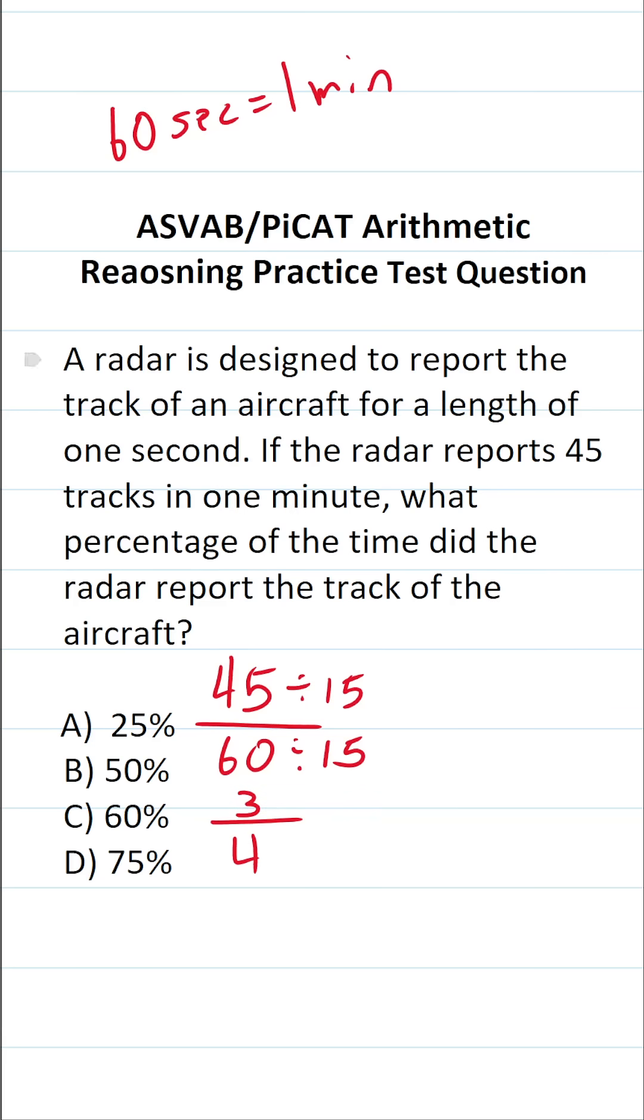You should know that 3 fourths is the same thing as 75%. Now I'm going to show you how to convert this to a percent using one of two methods. The first method involves rewriting this with a denominator of 100 because anything over 100 is percent.